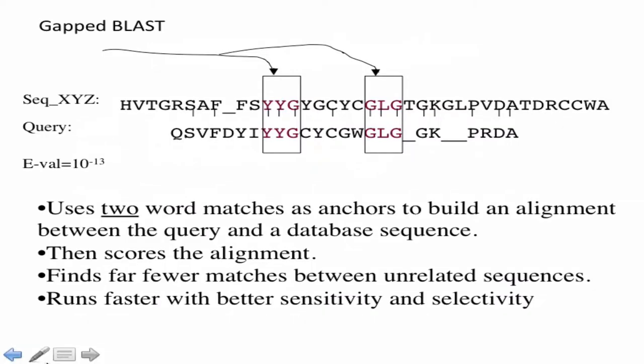A query word matches here and another matches there, with a defined distance between them. The double match triggers the alignment, and BLAST then tries to extend this paired alignment outward in both directions, adding pairs of amino acids with positive scores until it no longer makes sense to continue matching.